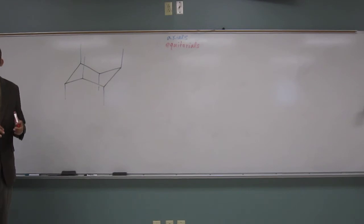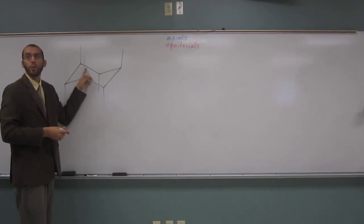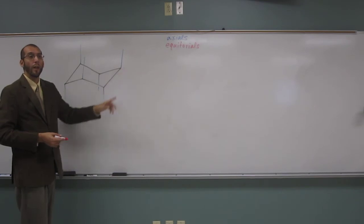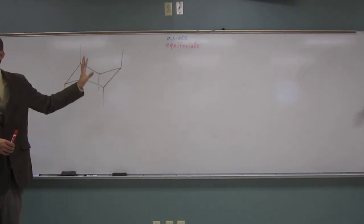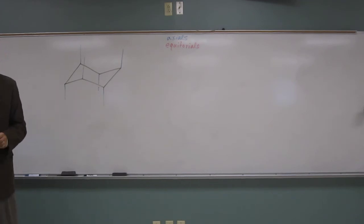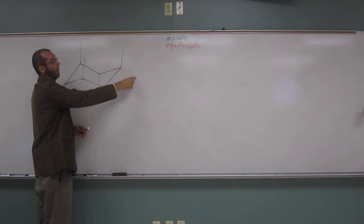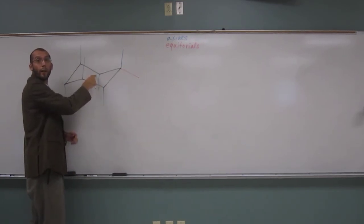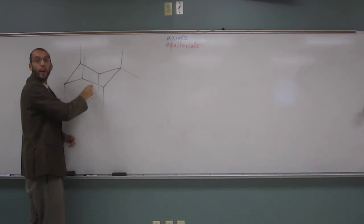The equatorial bonds are a little more difficult to place. They are parallel to the line two lines away from them. So when I have this carbon, it already has an axial bond, so the other bond it has is an equatorial bond. Every one of these carbons has an axial bond and an equatorial bond. I recommend writing your axials first — then your equatorials come in pretty easily. The equatorial here is parallel to the line two away.